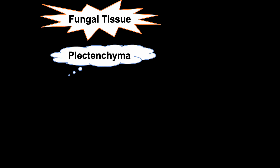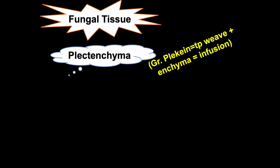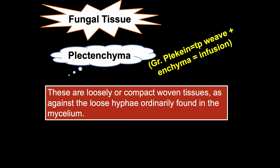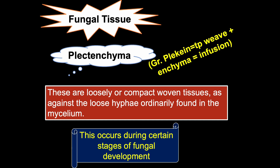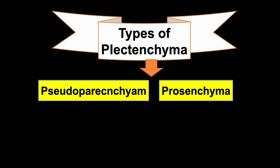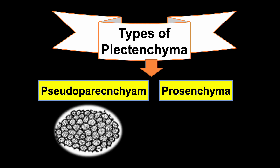Fungal tissues like plectenchyma are also considered important somatic structures. The word plectenchyma came from the Greek 'plekein' meaning to weave, and 'enchyma' meaning infusion. Plectenchyma are loosely or compactly woven tissues, as against the loose hyphae ordinarily found in mycelium. This occurs during certain stages of fungal development. There are mainly two types: pseudoparenchyma and prosenchyma.